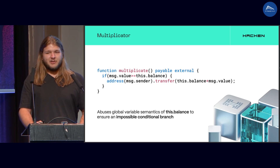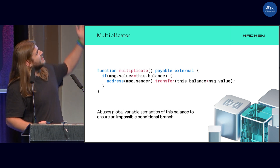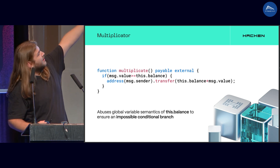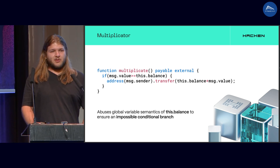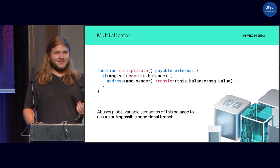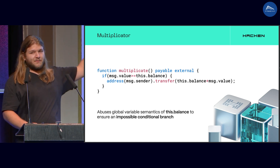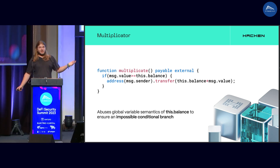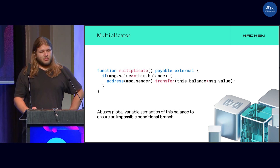Here is the multiplicator honeypot — that's the school-level example. We have a simple payable function that checks if your message value is bigger than the balance on the contract, and if it is, it sends you all the funds. Anyone know what's wrong? Well, this.balance already includes your value. So this if-check is really just going to be deleted by the compiler and nothing happens. This is an empty receive block. And this doesn't really work in practice — it's too simple.